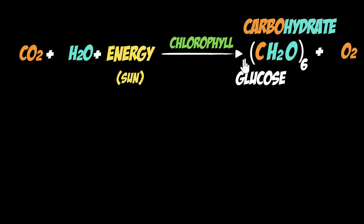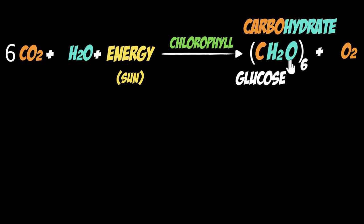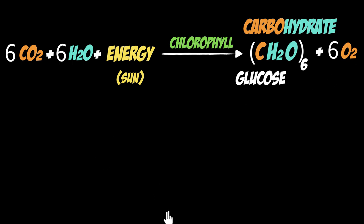But if you look carefully, the equation is not balanced. On the right we have six carbon atoms; on the left we just have one. So we need to balance it — try pausing the video to balance the equation yourself first. Since there are six carbons on the right, we multiply CO₂ by six. There are six water molecules on the right, so we multiply H₂O by six as well. Now looking at oxygen: six from CO₂ and six from H₂O give twelve oxygens on the left, and by multiplying O₂ by six we get twelve on the right. Now everything is balanced. We've talked about balancing equations in detail in chemistry videos if you need more clarity.